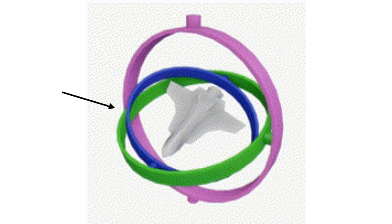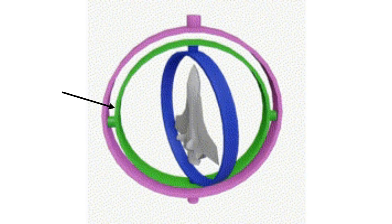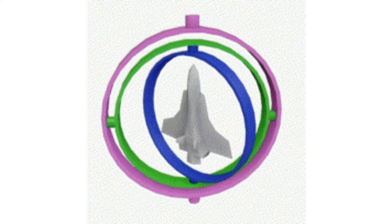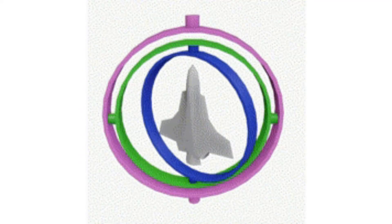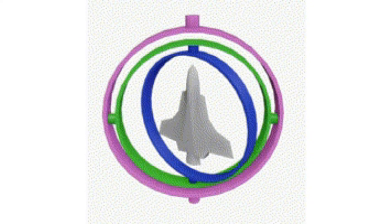Basically, these rings represent each of the degrees of freedom the plane can rotate around. Well, it's possible for two of these rings to line up, like this. When this happens, it's impossible to distinguish whether the plane is rotating due to this inner blue ring, or the outer purple one. We say that the plane has lost a degree of freedom, and this is what causes gimbal lock.